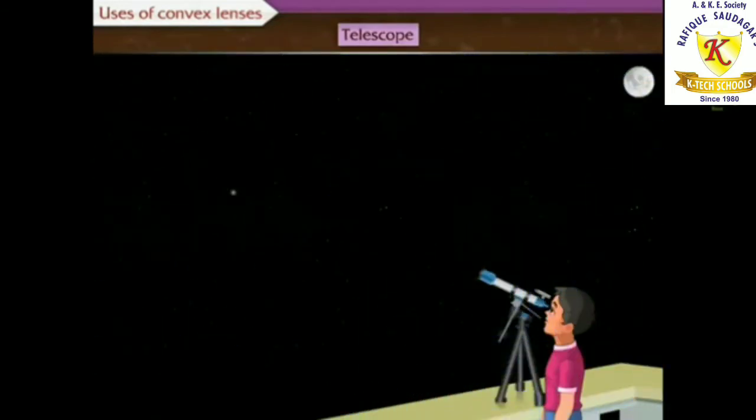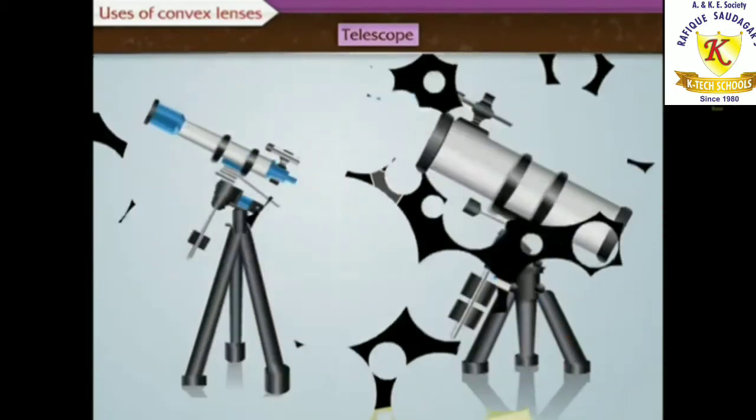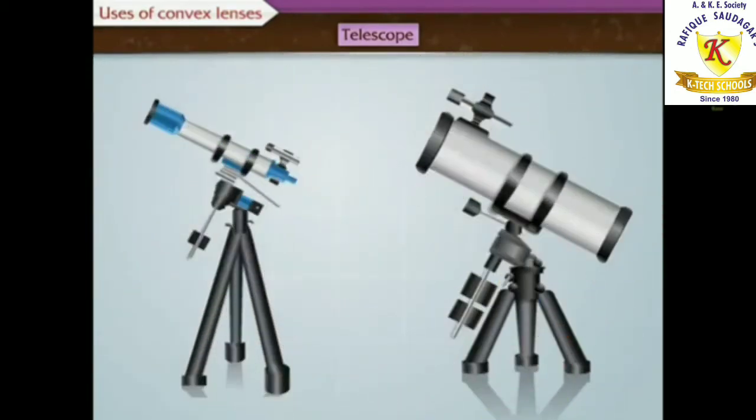The telescope is used to see distant objects clearly in their magnified form. The telescope used to observe astronomical sources like stars and planets are called astronomical telescopes. These telescopes are of two types.